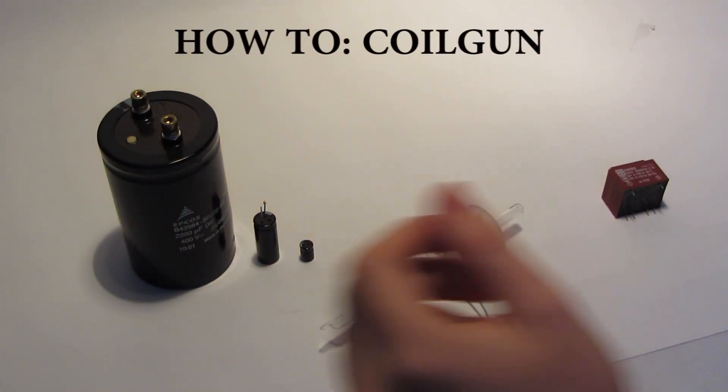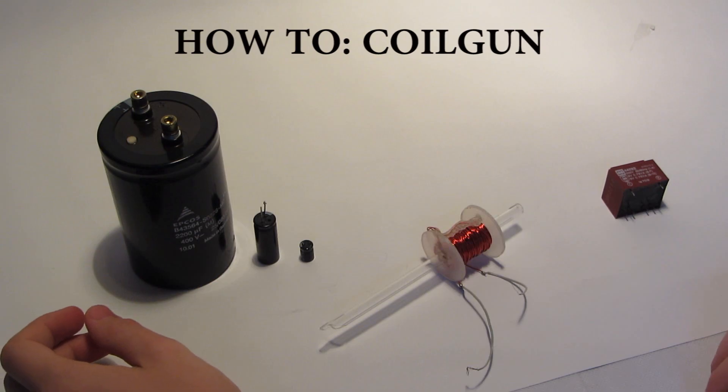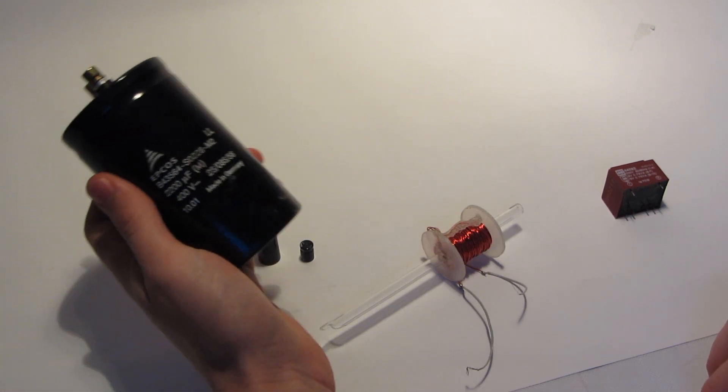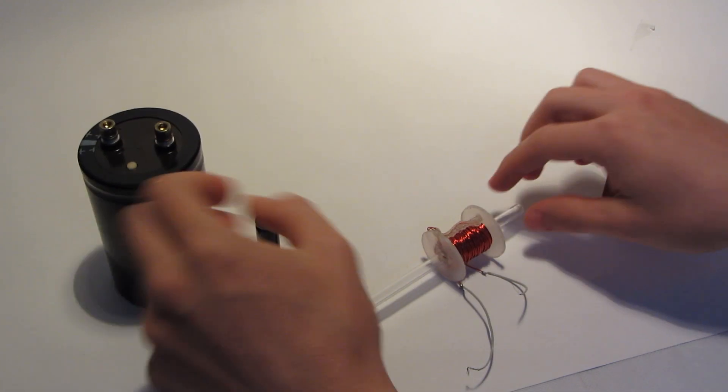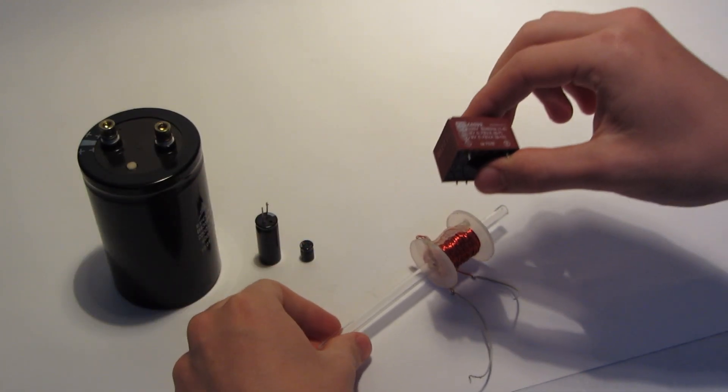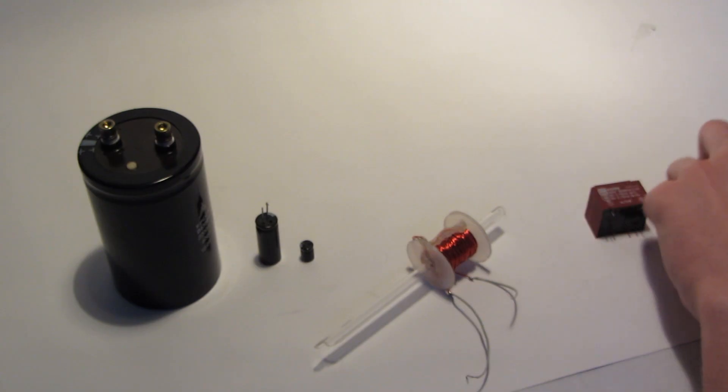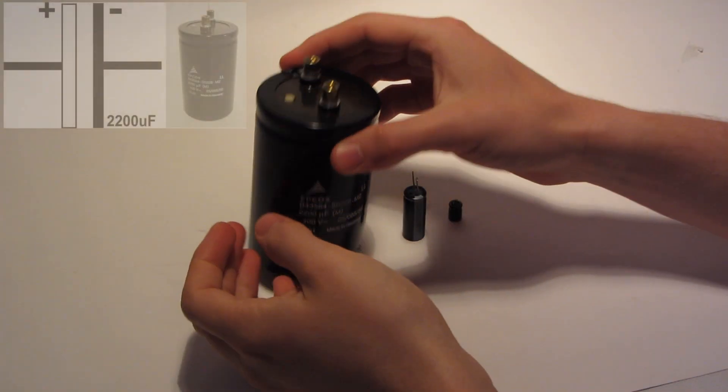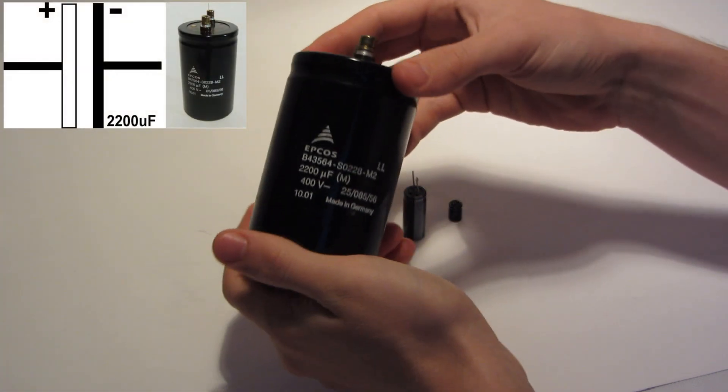Okay guys, today I'm going to show you how to build your own simple coil gun. You will need a capacitor, a coil, a transformer, and some kind of switch. This is a capacitor. It's our coil gun's energy storage.